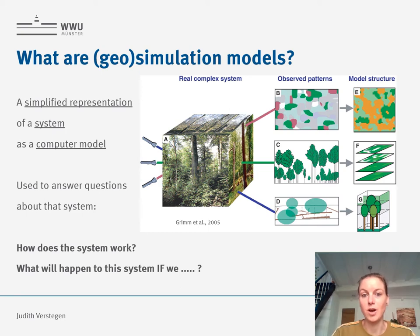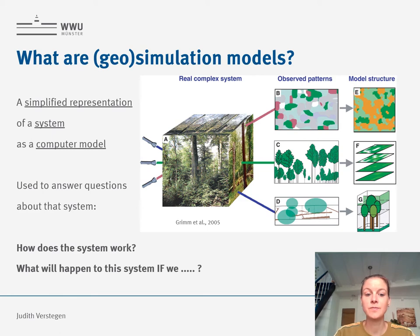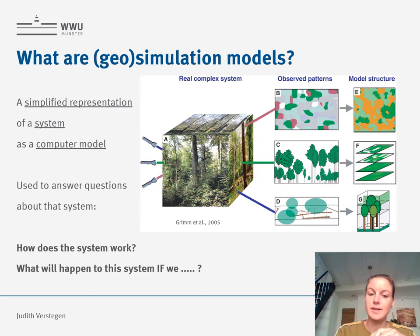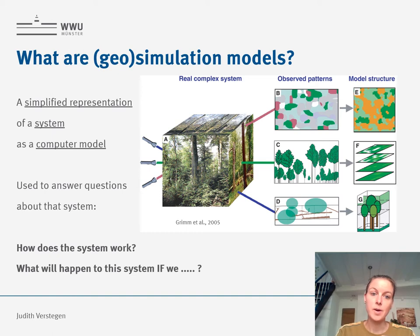Typically, the research questions we answer with geosimulation models can be divided into two categories. The first category is questions for understanding — for example, how does this system work? It may seem contradictory because we need to know the rules of the system before we can implement them, but this implementation is typically an iterative process. We have a certain hypothesis of how the system works, we build a computational model, that model gives us system state changes, and then we compare that with what we observe in the real world to increase our knowledge.